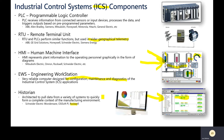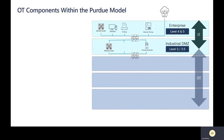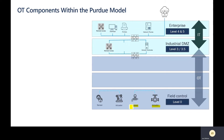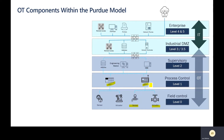These are the different components of the OT network. Now let's place these control systems in the right layer within the Purdue model. At level zero, you have actuators and sensors — the field control components. At the process layer (level one), this is where PLCs and RTUs reside. At the supervisory layer (level two), you have your HMI, engineering workstation, and historian. This provides different visibility depending on which layer of the OT network you're in.